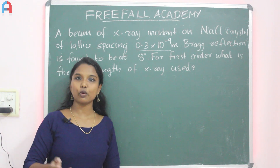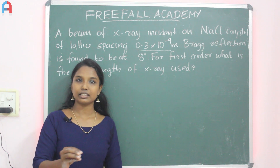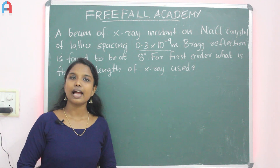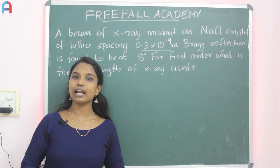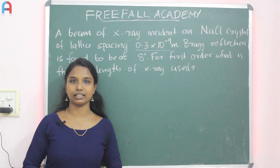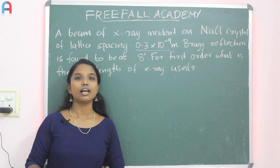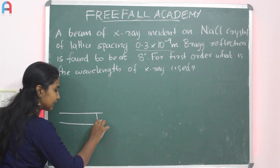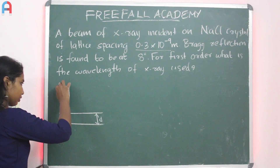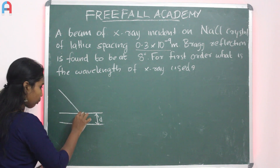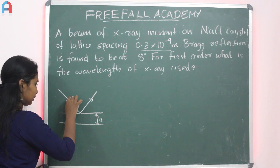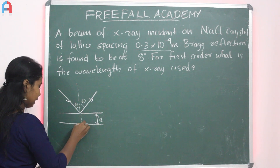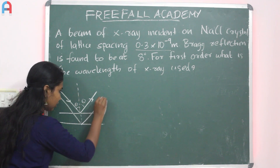Next, lattice point: a lattice point is not the same as a unit cell. At least 3 non-collinear lattice points define a lattice plane. Consider two lattice planes separated by a distance d. A wave is scattered with angle of incidence theta and angle of reflection theta, and scatters from the second plane as well.